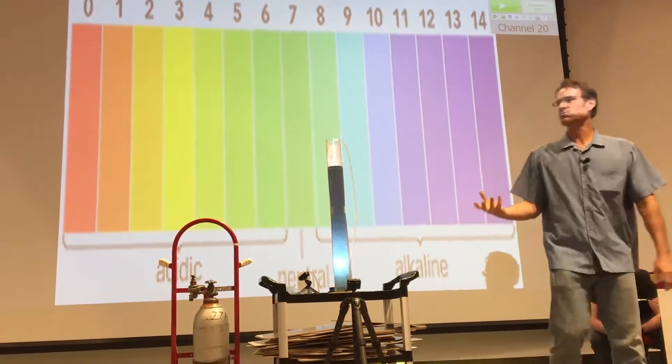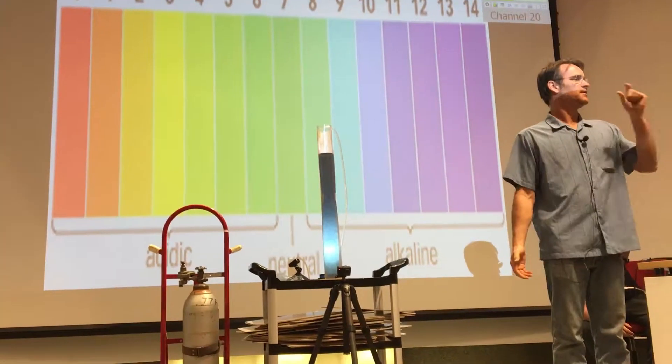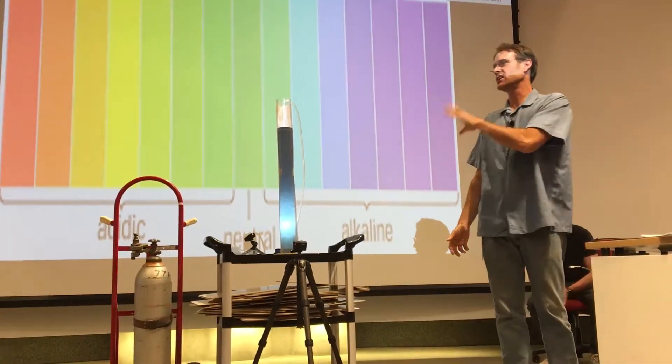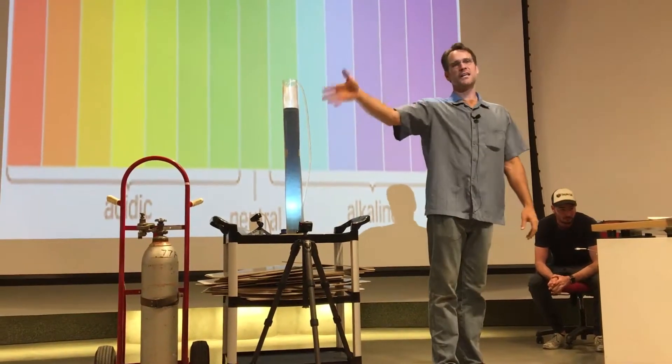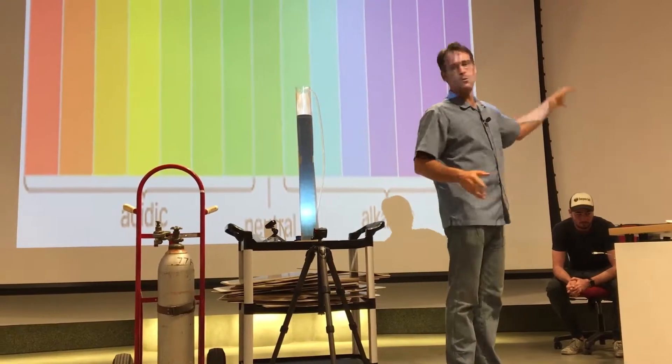So when we talk about pH, that's really just the concentration of hydrogen, the hydrogen ion, the plus hydrogen ion. When you have a lot of hydrogen, things go acidic. When you have a low amount of hydrogen, things go basic.